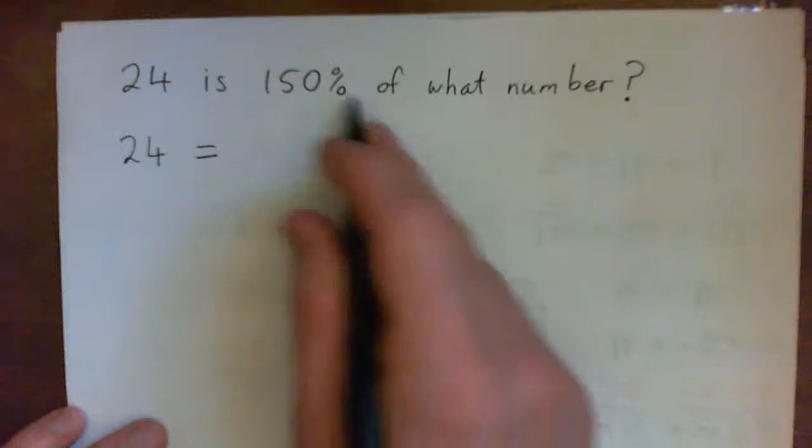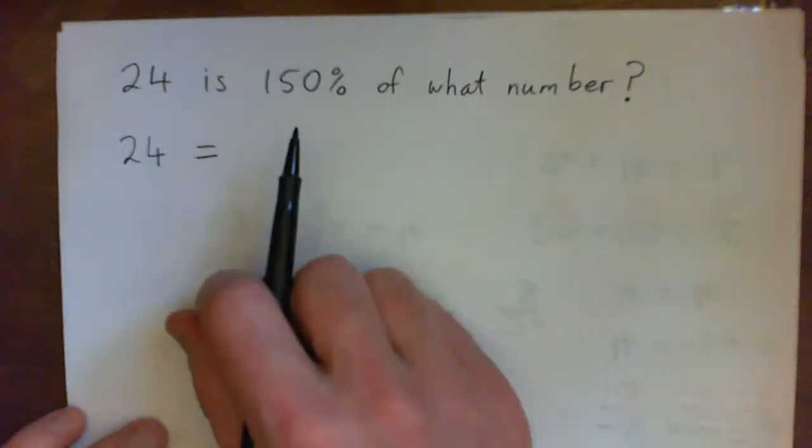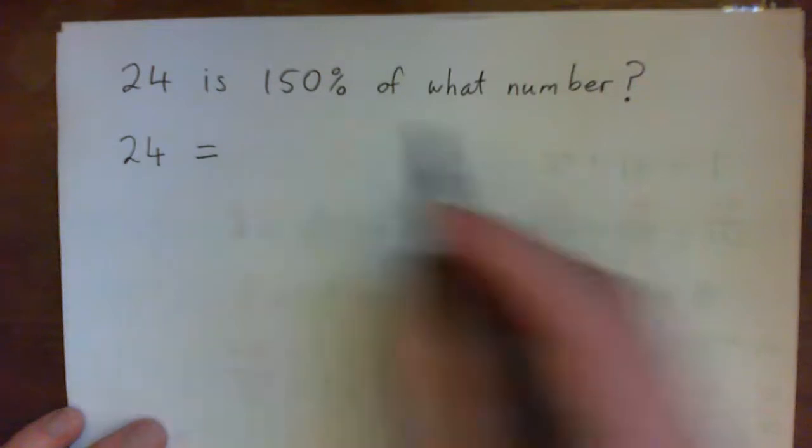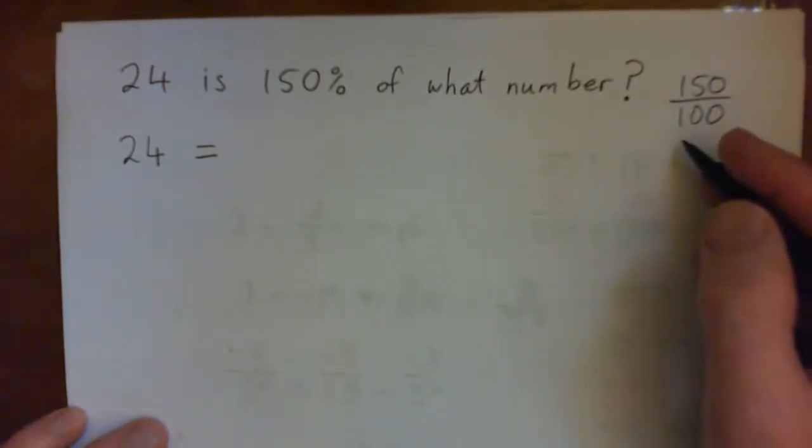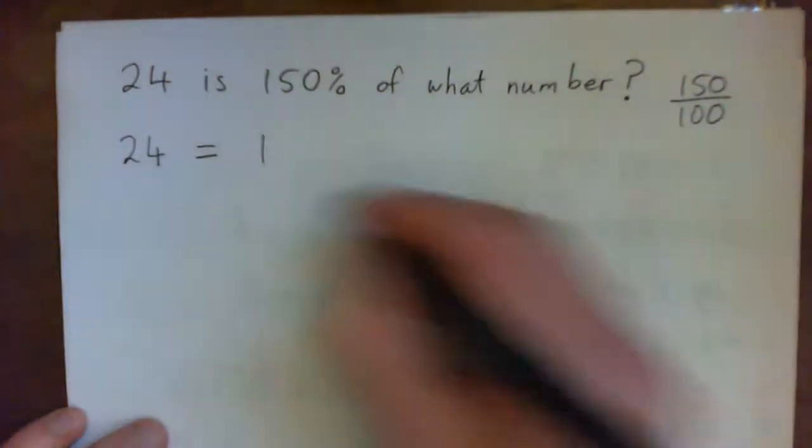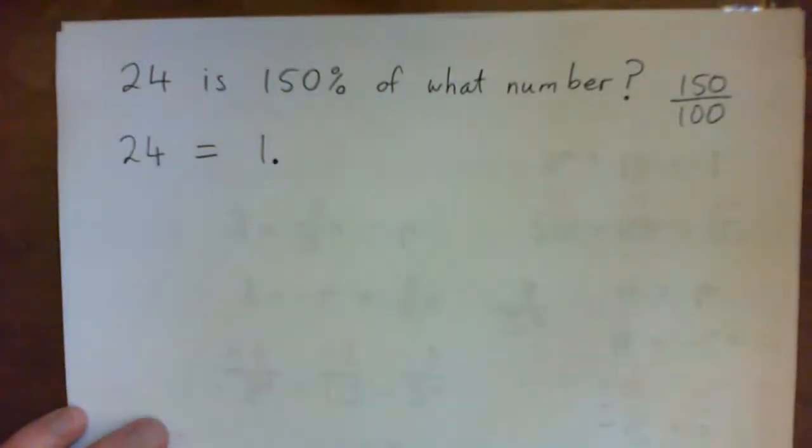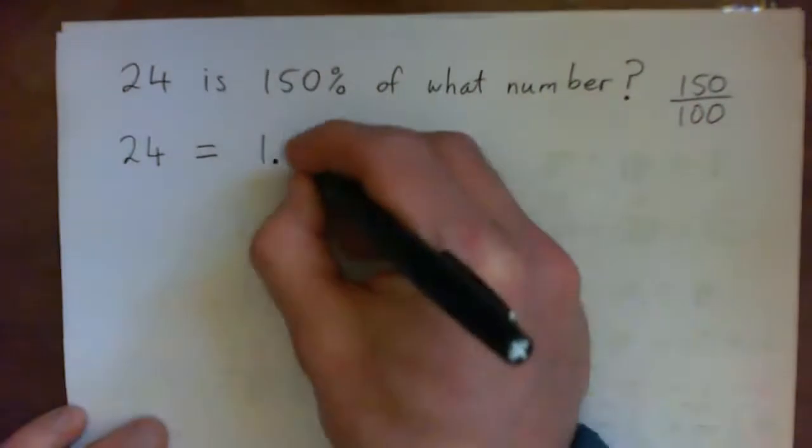150%, I want you to turn that into a decimal. So 150%, by the way, is 150 per hundred. 150 over 100.